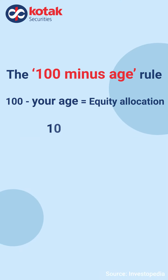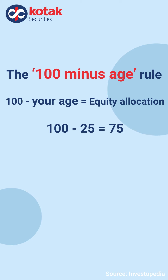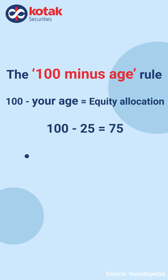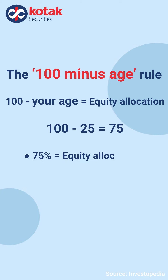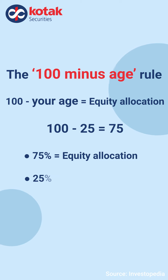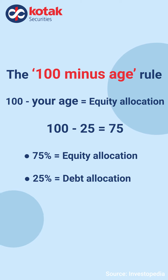For example, if you are 65 years old, then it will be 100 minus 25, which will be equal to 75. So, 75% will be your equity allocation, whereas the balance 25% will be your debt allocation.